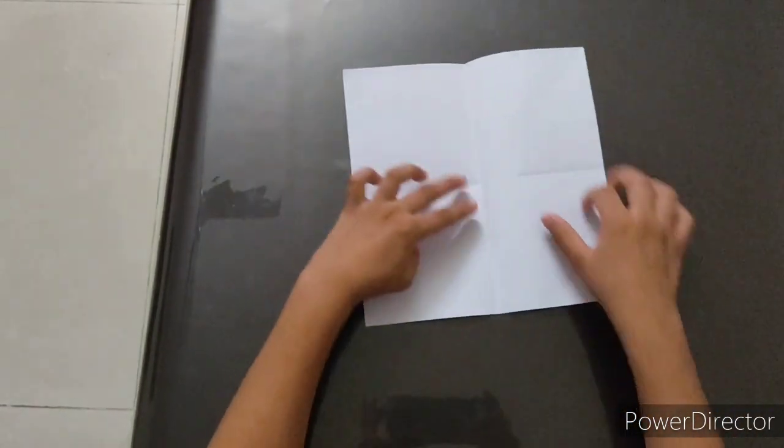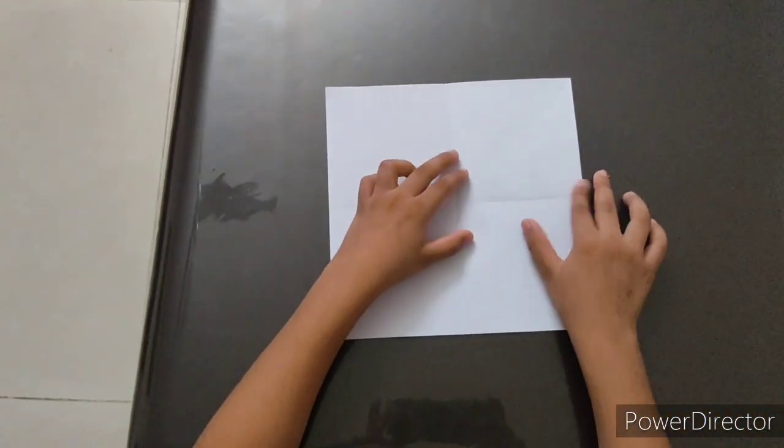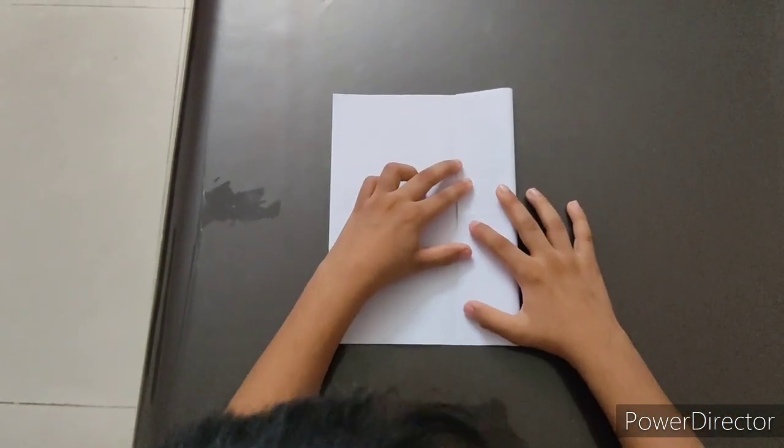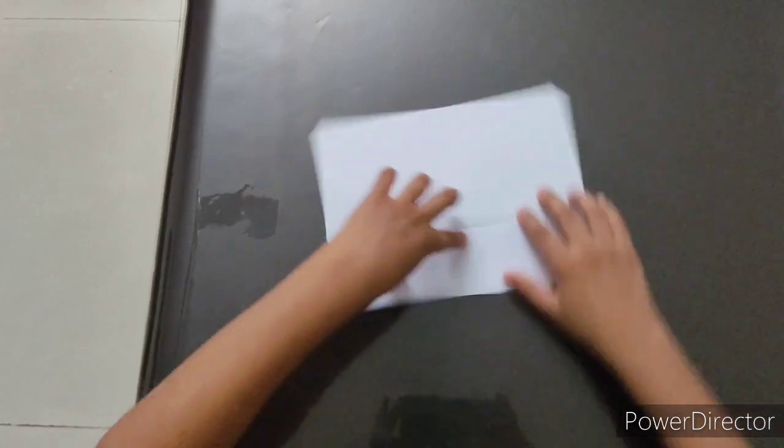Turn the paper and fold this edge till here so that it gets divided into another half. Now, open, fold this edge till the middle like this. Repeat the same, the other side.